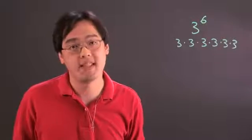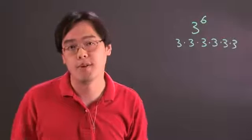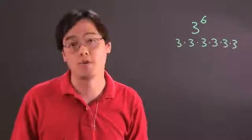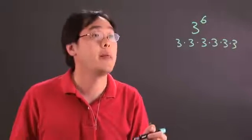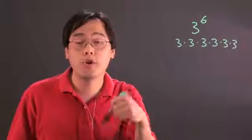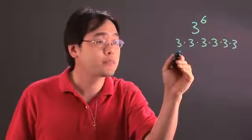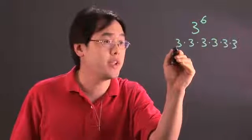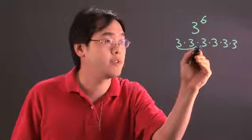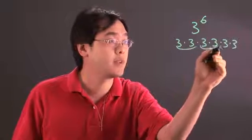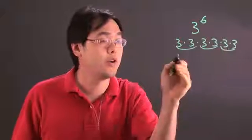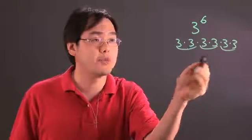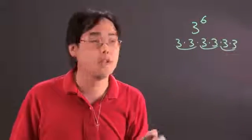Now, some people think that's 18, but you know that's not really true because the number does grow pretty quickly. When you multiply by the sixth power, one approach would be to break it off into pairs, like so: 3 times 3, 3 times 3, 3 times 3.